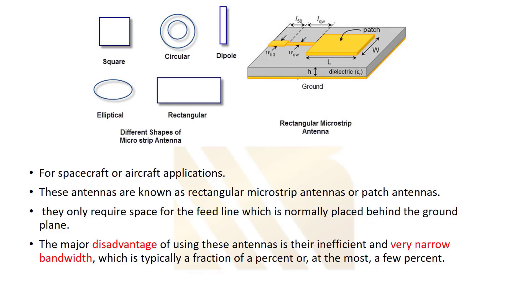We can make a microstrip antenna if we have a dielectric and a metal layer. Imagine we have a metal layer covered by a dielectric, which is then covered by metal. We put a mask in the desired shape, etch certain parts, and remove the surrounding metal, leaving the patterned metal in place. This is a microstrip antenna — we can make them in a square shape, dipole, or many other shapes. These antennas have a very small size because the frequency is high, so the wavelength is small.